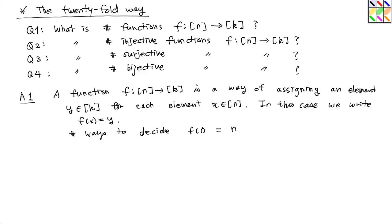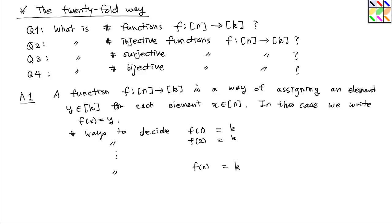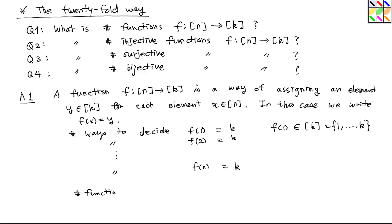By the same reason, the number of ways to decide f of 2 is also k. Actually, they are all k instead of n, because f of 1 is in k, which is the set of k elements. So there are k possibilities for f of 1, k possibilities for f of 2, and k possibilities for f of n. So the number of functions from n to k is equal to the product of them, which is k to the n. This answers the first question.